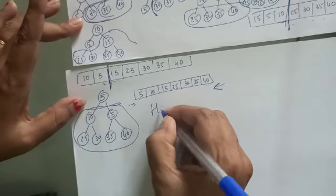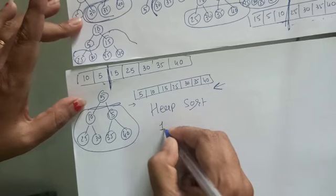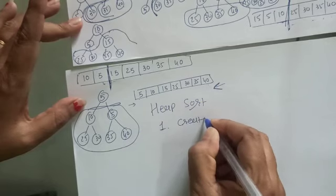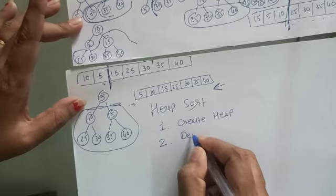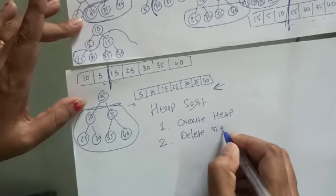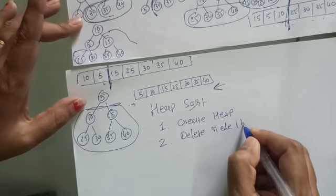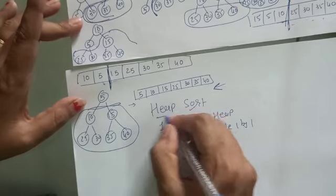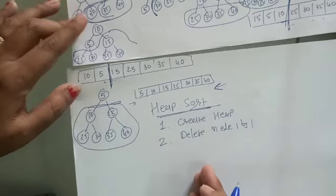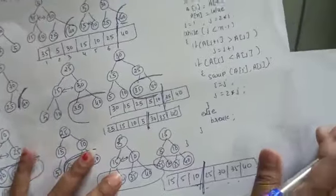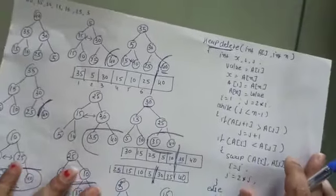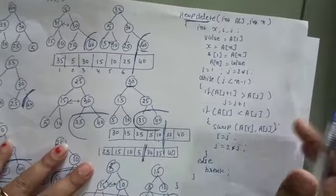The algorithm of heap sort is nothing but first we will create a heap, that we have already discussed, and second is delete an element one by one. This is nothing but heap sort, so let us discuss the algorithm of this deletion from a heap.